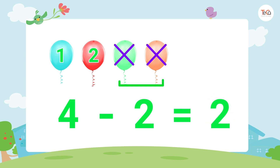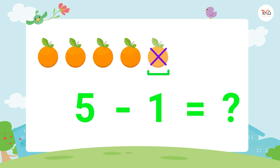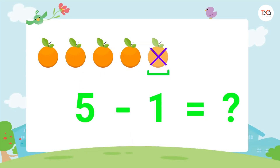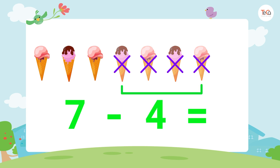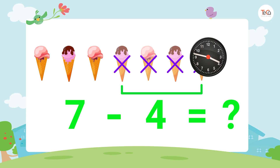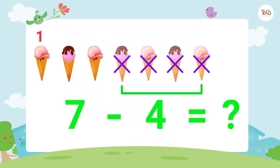Five oranges minus one orange equals — good job! Here we have one, two, three, four. So five minus one equals four. Seven ice creams minus four ice creams equals — well done! Here we have one, two, three. So seven minus four equals three.